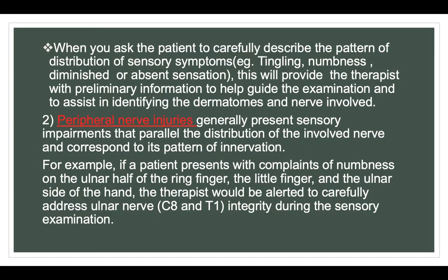Peripheral nerve injuries generally present sensory impairments that parallel the distribution of the involved nerve and correspond to its pattern of innervation. For example, if a patient presents with complaints of numbness on the ulnar half of the ring finger, the little finger and the ulnar side of the hand, the therapist would be alerted to carefully address ulnar nerve C8 and T1 integrity during the sensory examination.